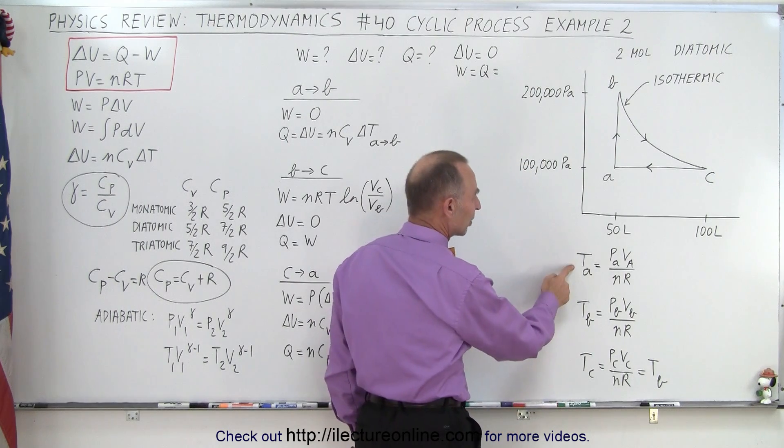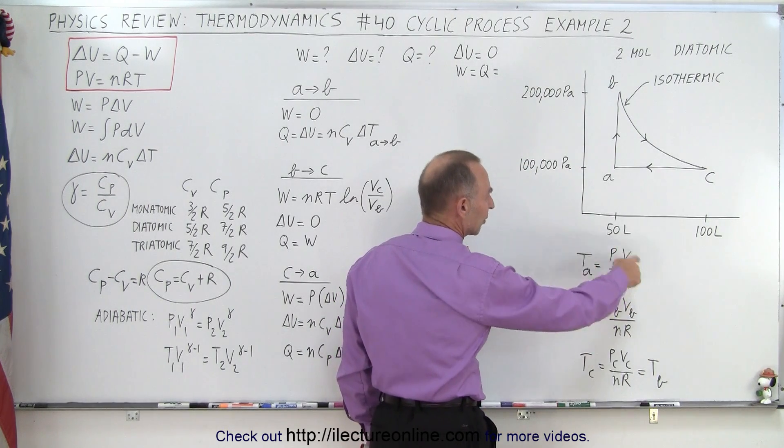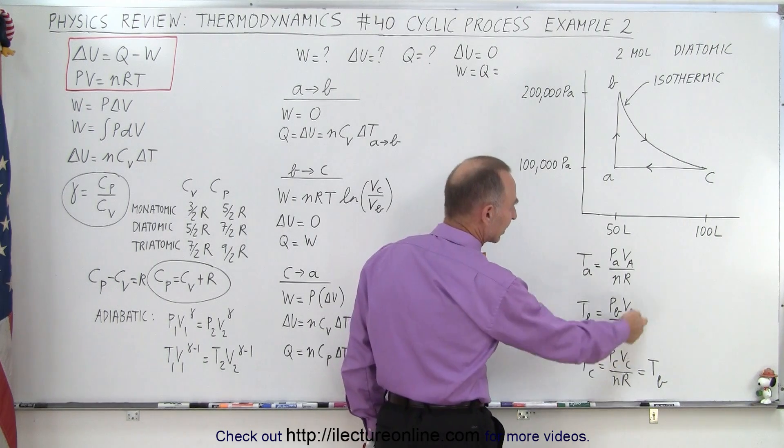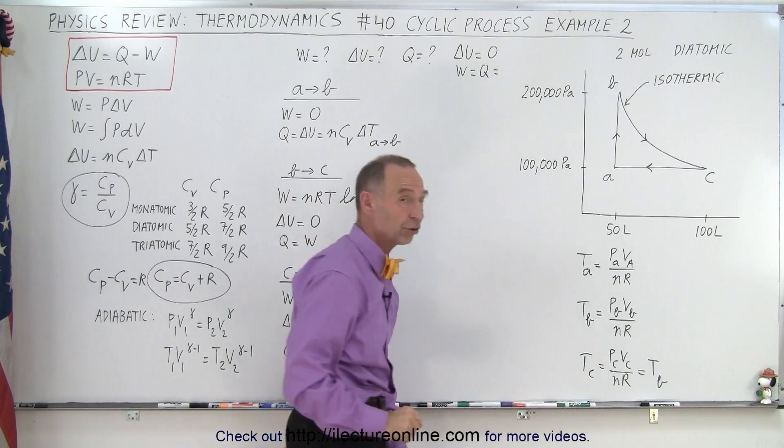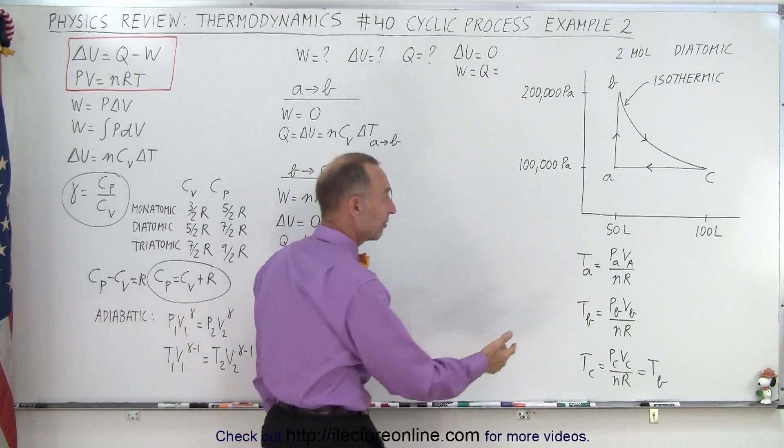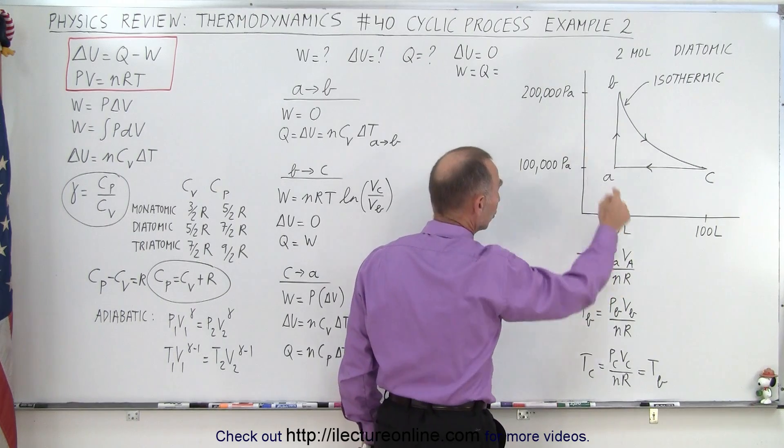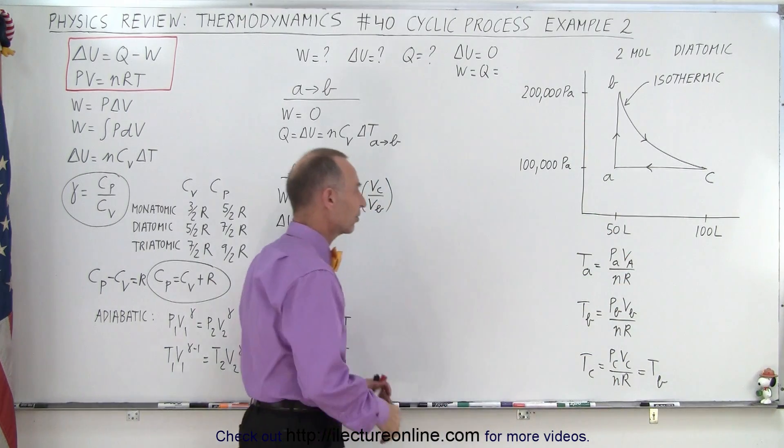But to find the temperature at A, we use the equation that we use for the ideal gas equation, and then for temperature at B, again, the ideal gas equation gives us those two temperatures. All we have to do is plug in the values for pressure, volume, and the number of moles is 2, and R, the gas constant.